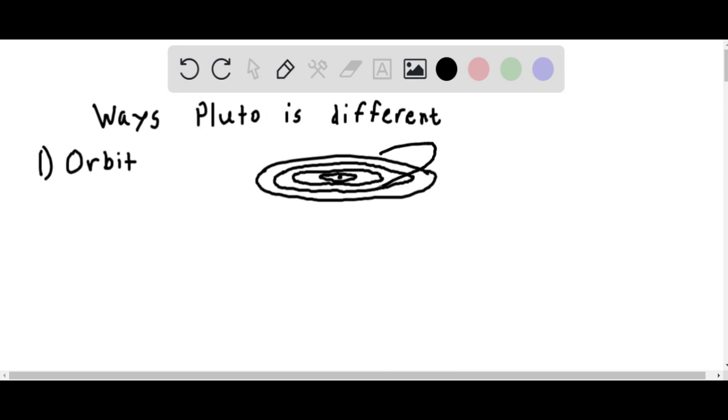Pluto's orbit, on the other hand, is very elliptical and highly inclined. It actually comes closer to the Sun than Neptune for about 20 years out of its 248 Earth-year-long orbit around the Sun, something none of the eight major planets does.